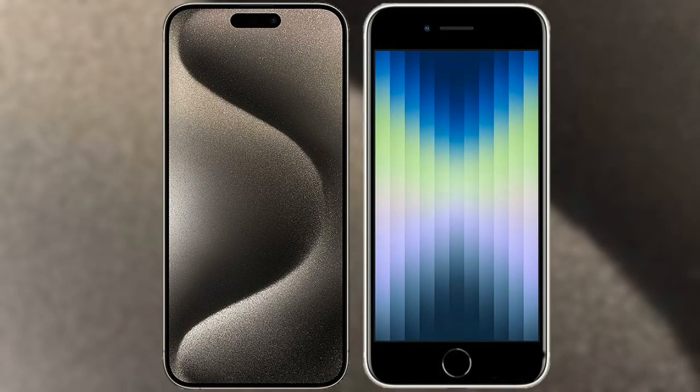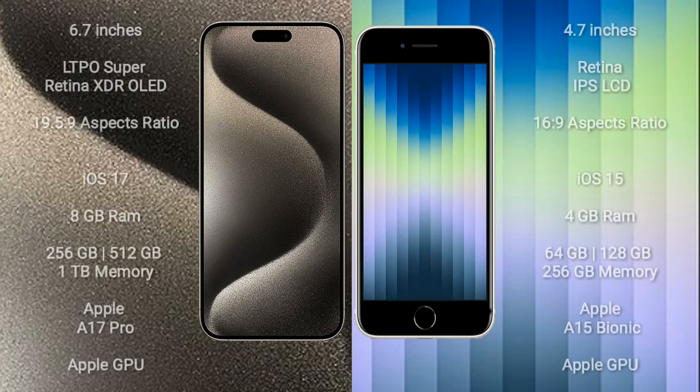I will compare the new iPhone 15 Pro Max with iPhone AC. iPhone 15 Pro Max comes with a 6.7-inch LTPO Super Retina XDR OLED display and an aspect ratio of 19.5:9. iPhone AC comes with a 4.7-inch Retina IPS LCD display and an aspect ratio of 16:9.